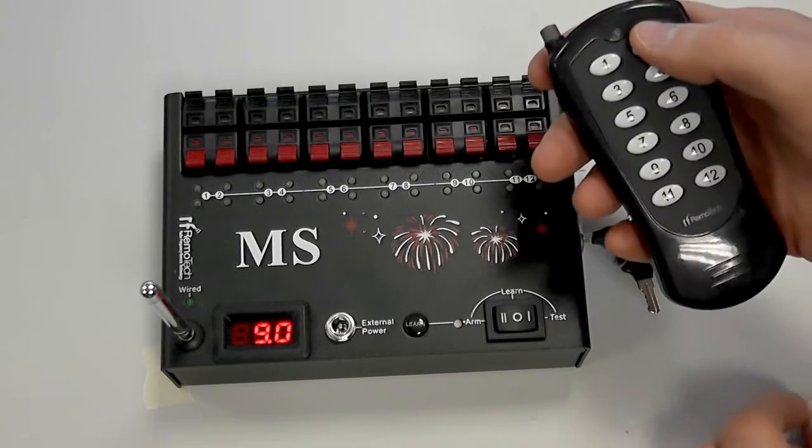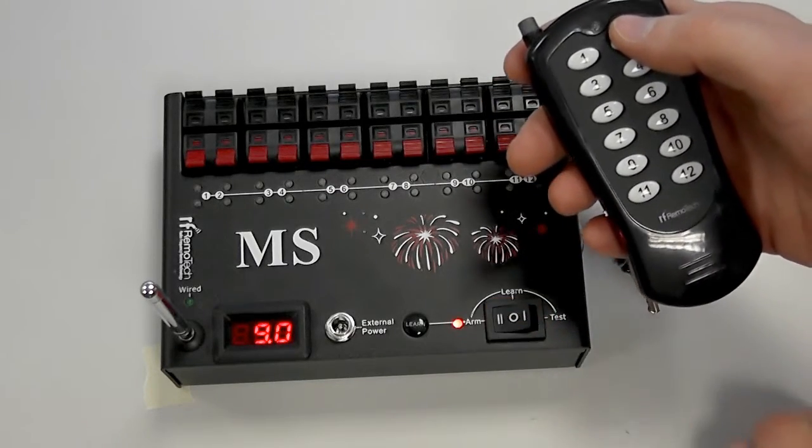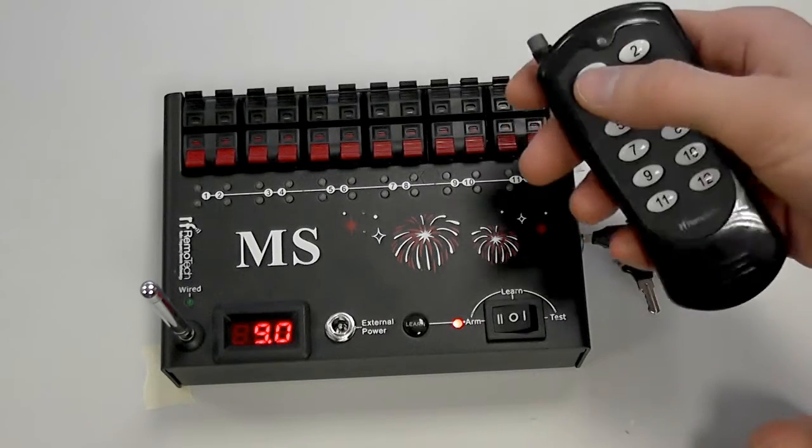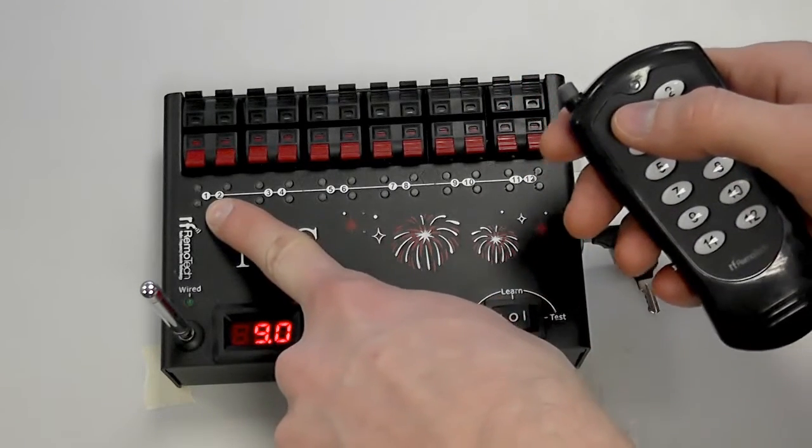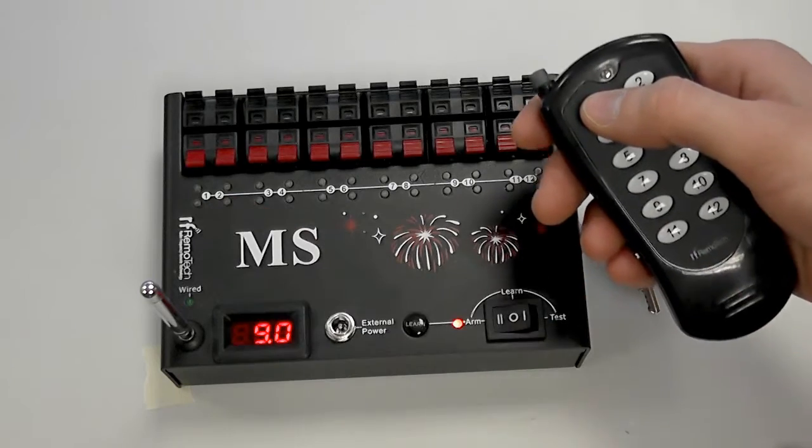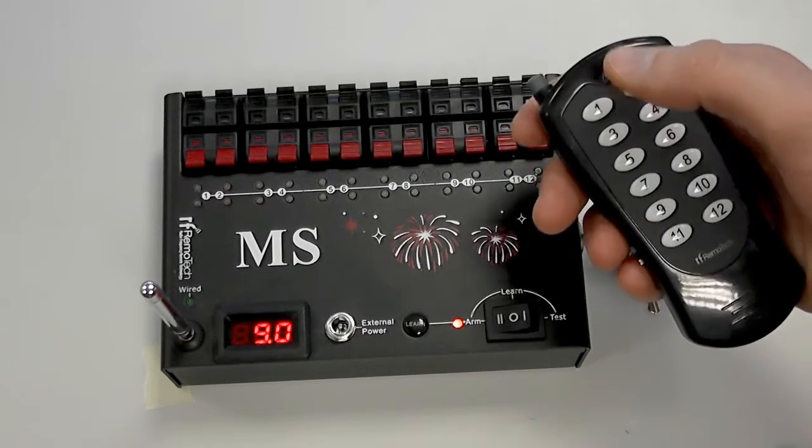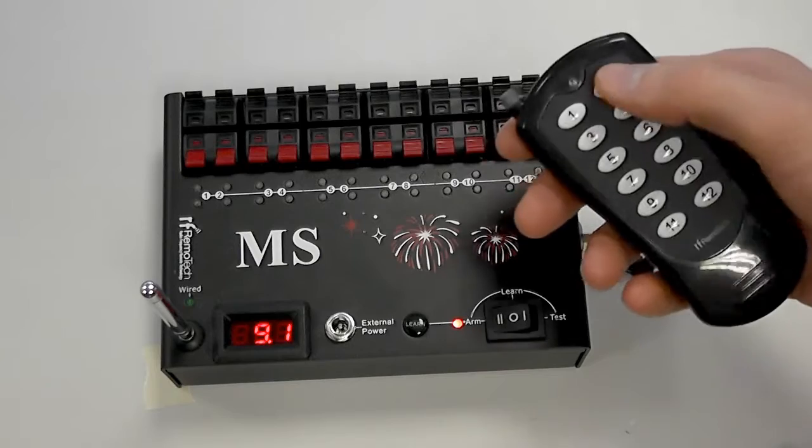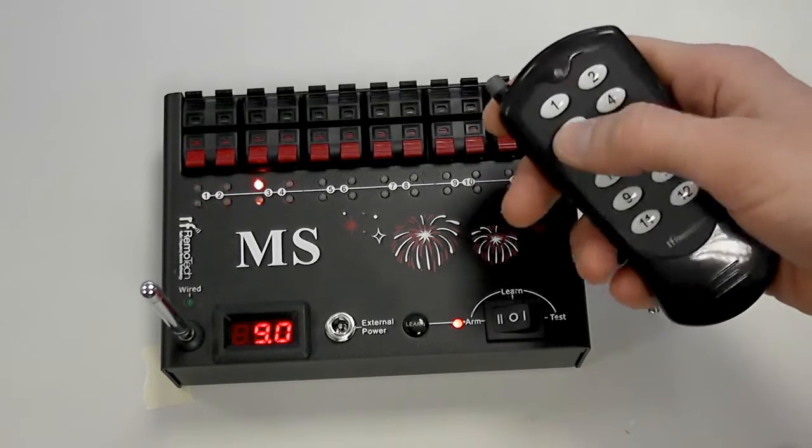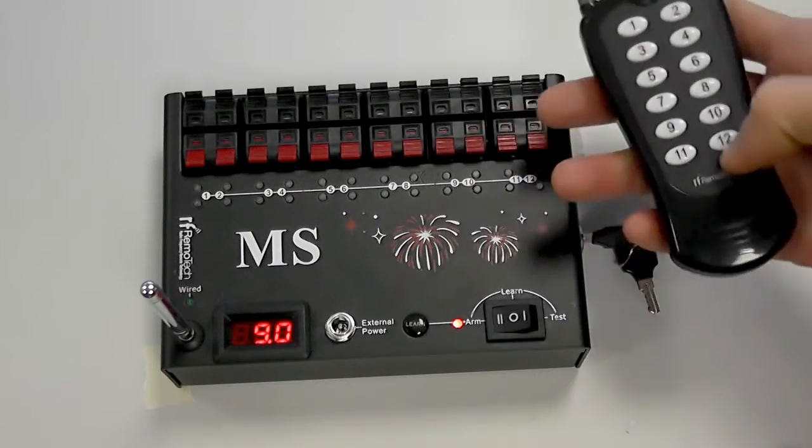So if I was to put the system to arm mode it's now ready to fire. So if I press button 1 you should see Q1 fire here. So we'll do this in 3, 2, 1. You can see Q1 fired. I can do the same for Q2, Q3, Q4 and so on up to Q12.